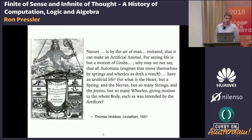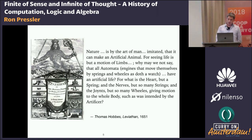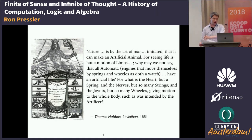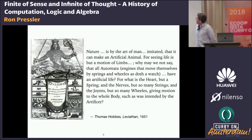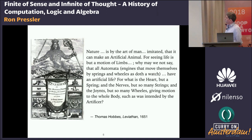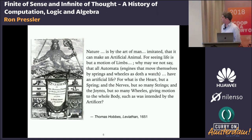Aristotle's system of logic, which was a rhetorical device, was to be adapted to a very different use in the 17th century, the time of the scientific revolution. The relevant context and direct inspiration for this new use is given by the English philosopher Thomas Hobbes, who wrote: 'Nature is by the art of man imitated, that it can make an artificial animal. For seeing life is but a motion of limbs, why may we not say that all automata — engines that move themselves by springs and wheels, as doth a watch — have an artificial life? For what is the heart but a spring, and the nerves but so many strings, and the joints but so many wheels, giving motion to the whole body, such as was intended by the artificer?'